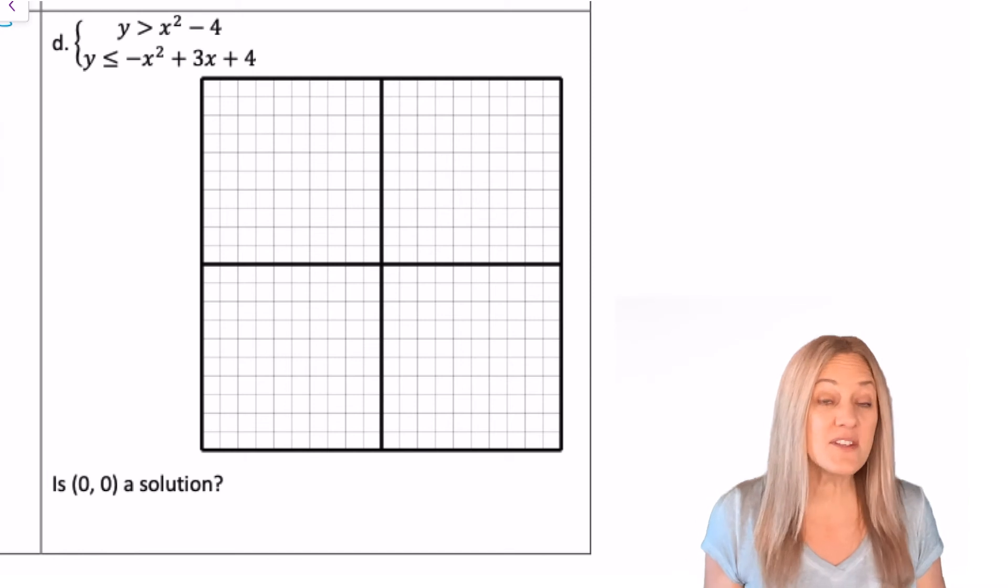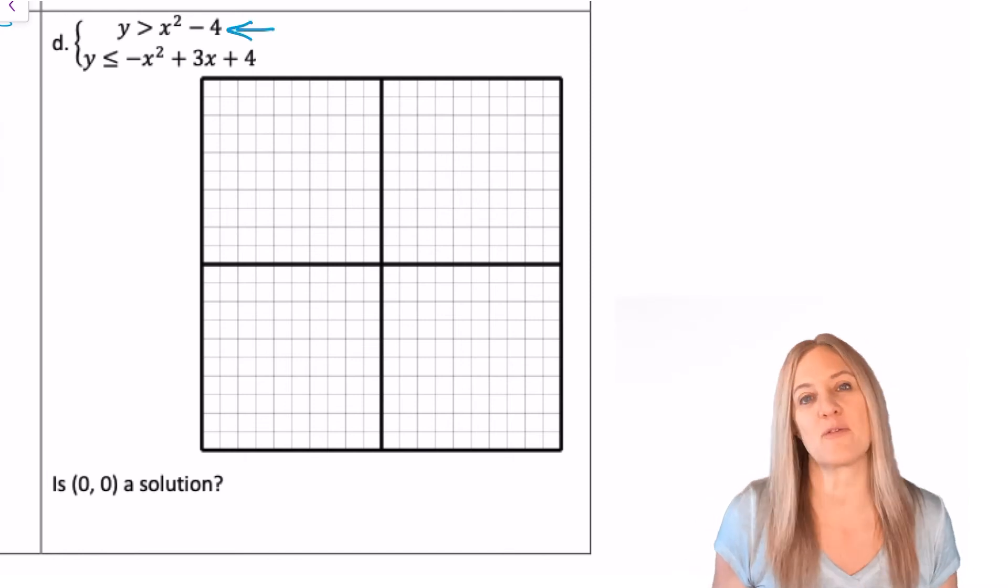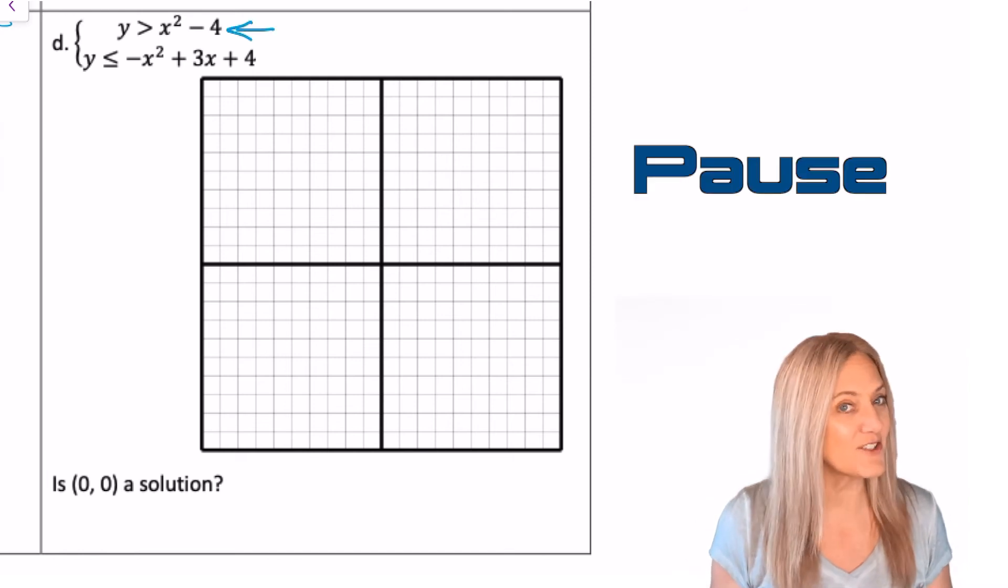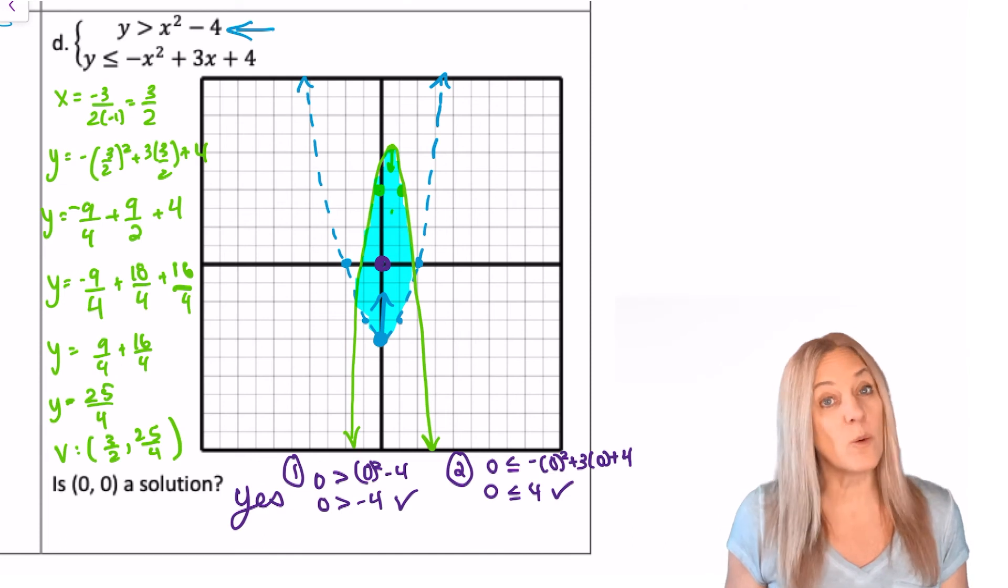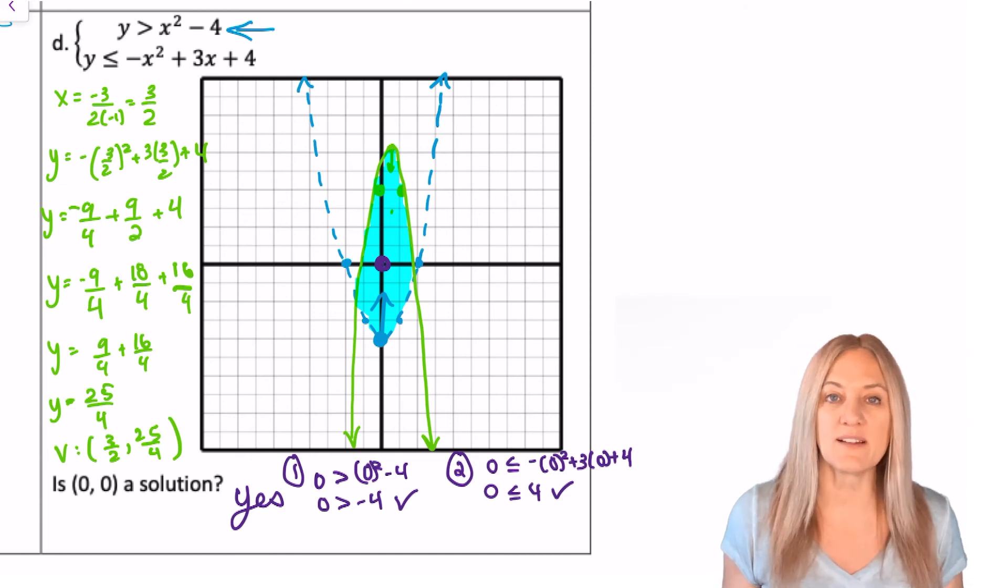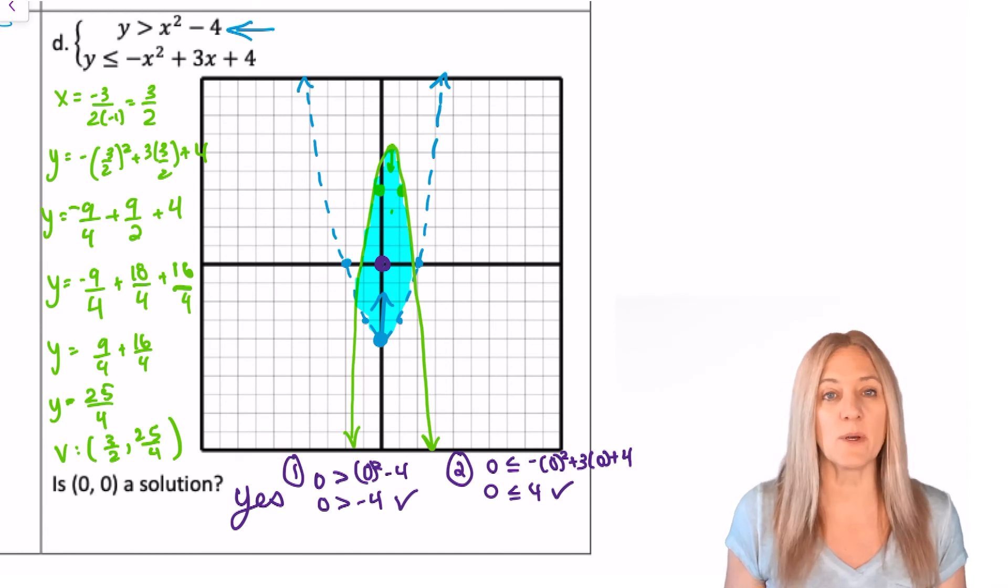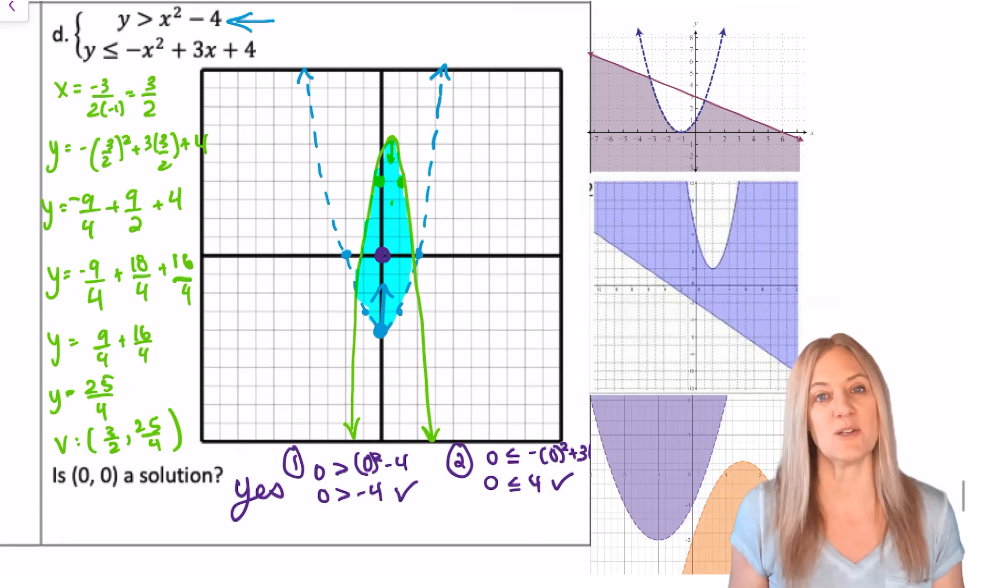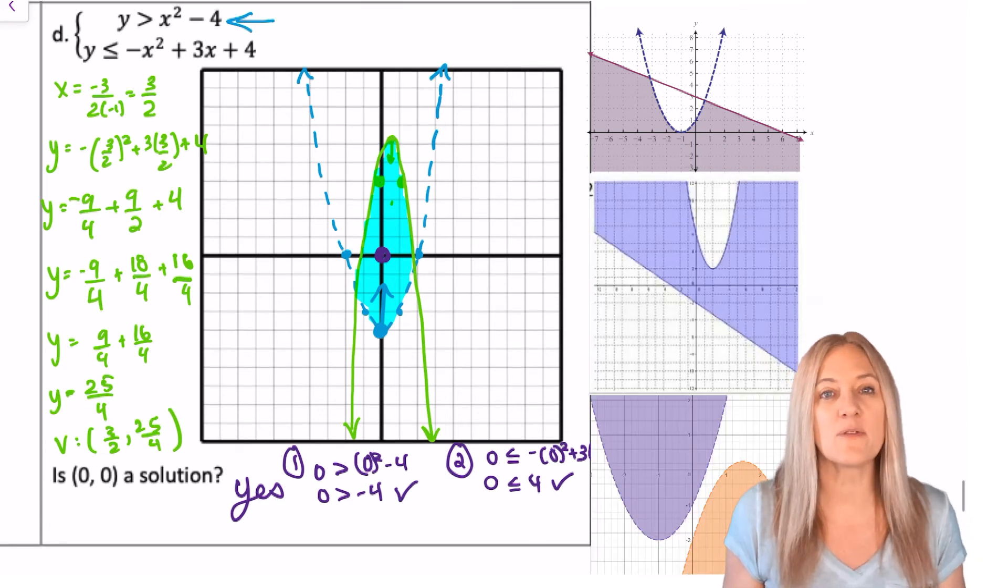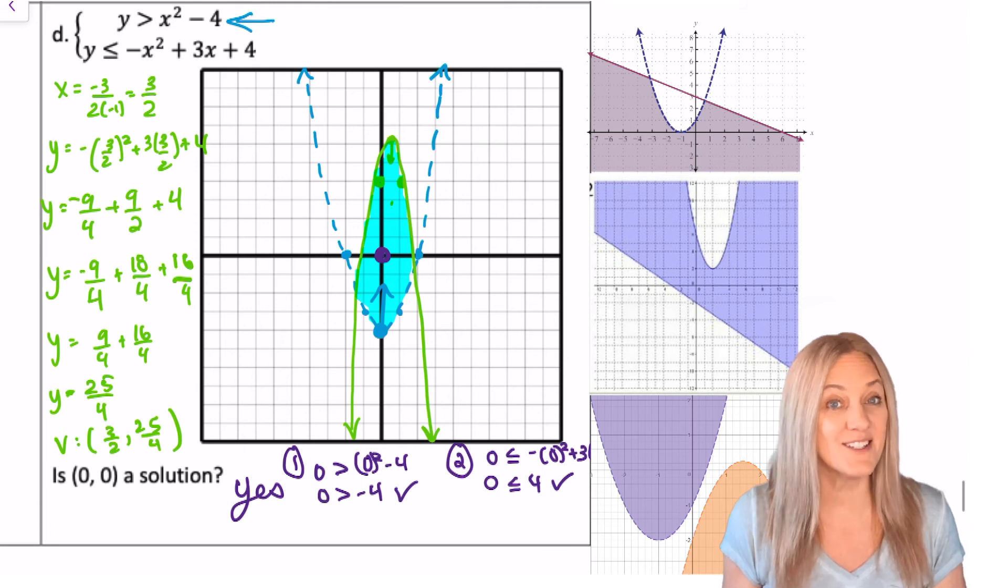Graph the next system. Notice the first one is just a transformation of the parent function. Pay attention to dashed or solid. Check your work. Did you find that 0, 0 was a solution of the system? It is, and we showed it algebraically as well. Now, keep in mind going forward, the shaded region is not always the trapped region between the two parabolas. Always follow the math and check for where it is shaded.